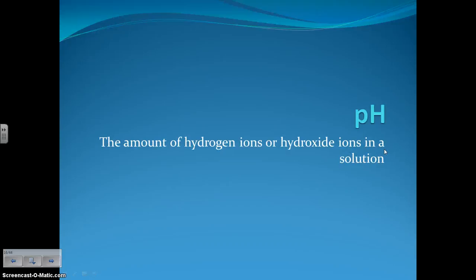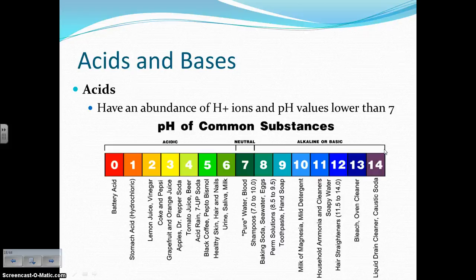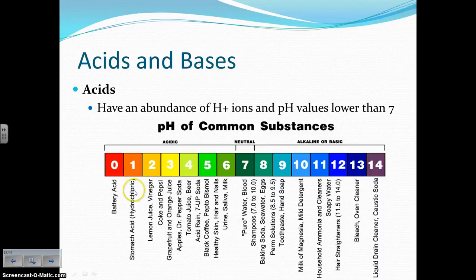Moving on, our next topic is pH — the amount of hydrogen ions or hydroxide ions in a solution, and more specifically the values of acidity or basicity. Acids have an abundance of hydrogen ions, H+ ions, and have pH values lower than 7. Some common acids include battery acid, which is a very strong acid far from neutral — the further from neutral, the stronger the acid or base. Stomach acid, lemon juice, vinegar, soda, and coffee are all acids on the pH range.